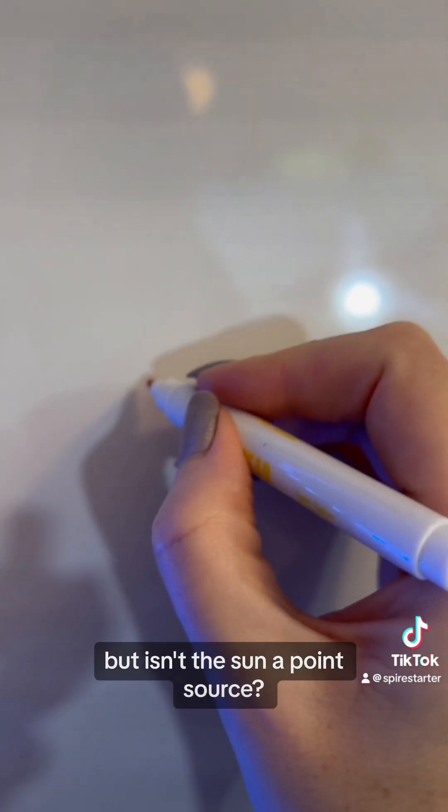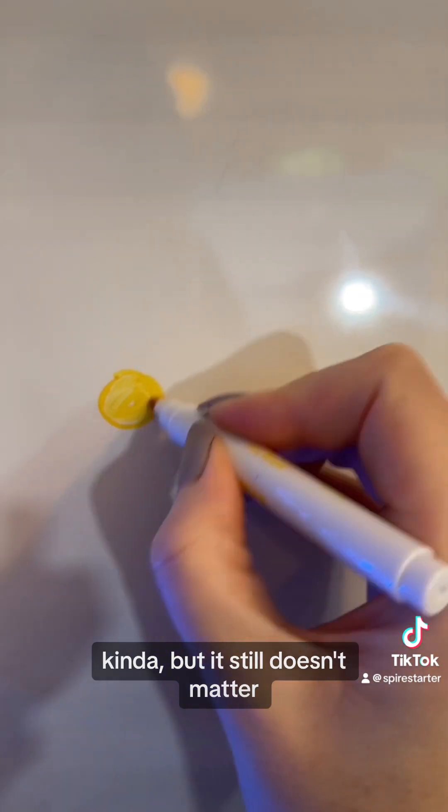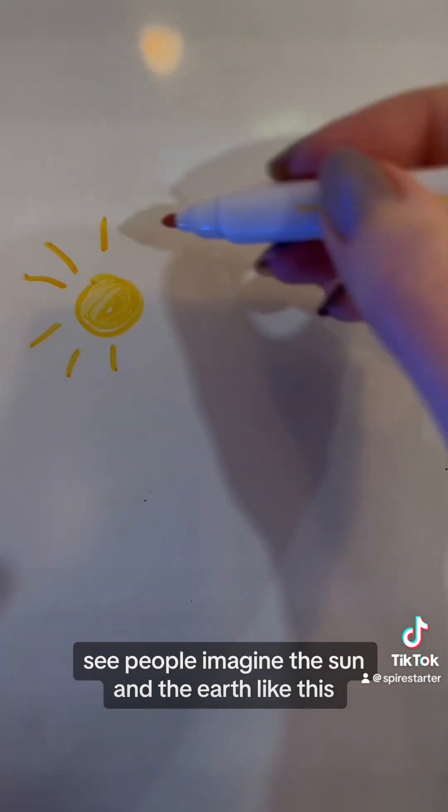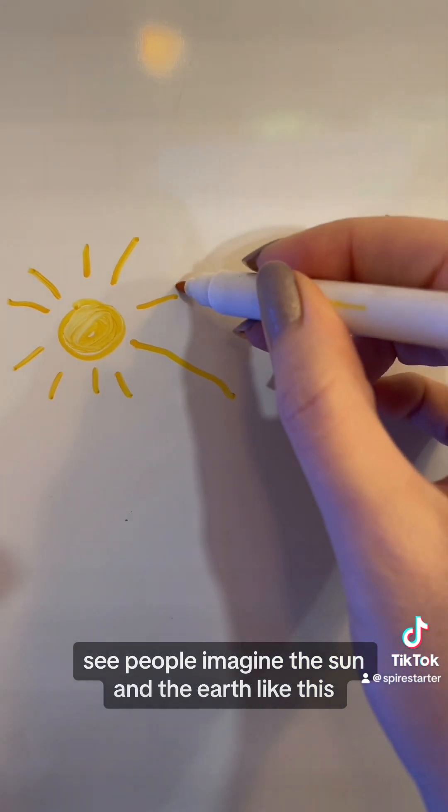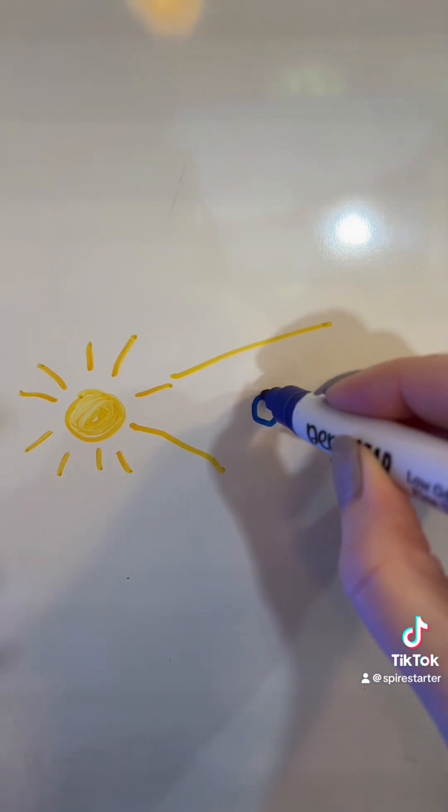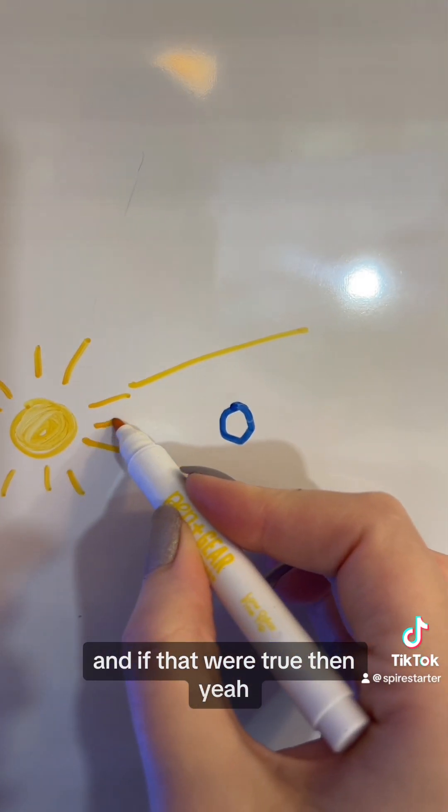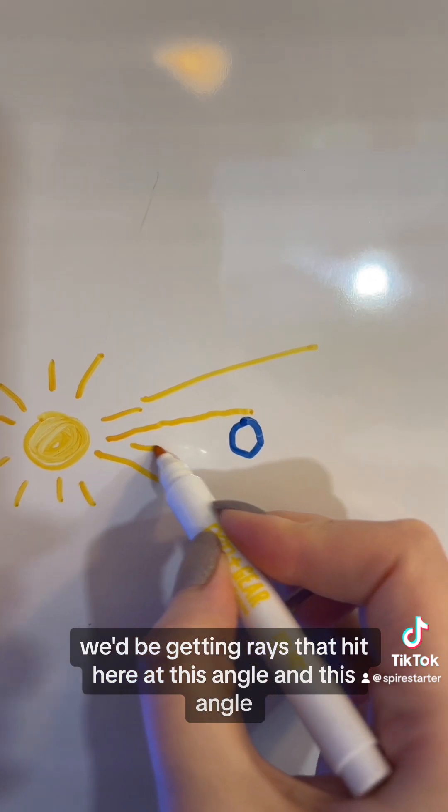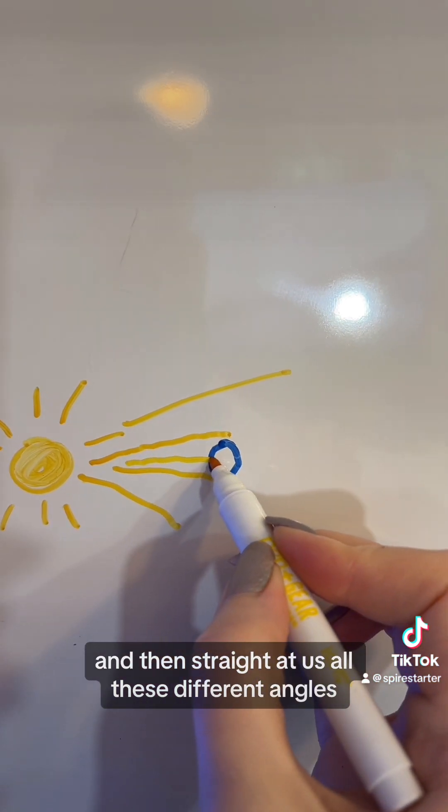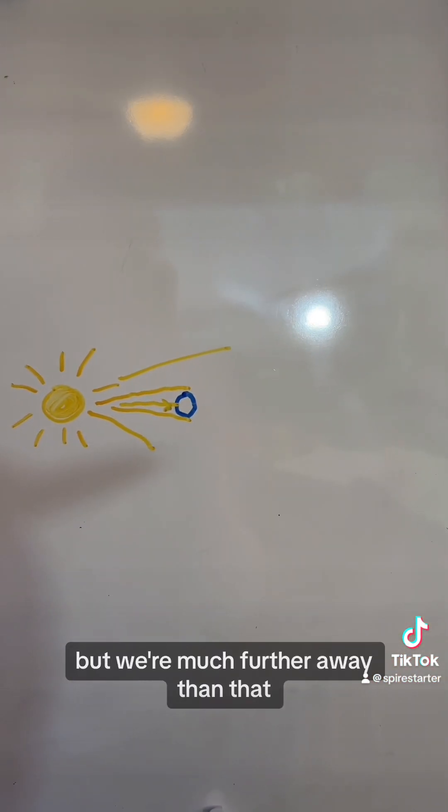But isn't the sun a point source? Yeah, kind of, but it still doesn't matter. See, people imagine the sun and the earth like this. And if that were true, then yeah, we'd be getting rays that hit here at this angle, and this angle, and then straight at us all these different angles.